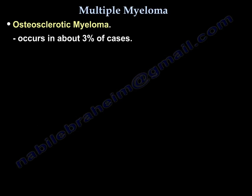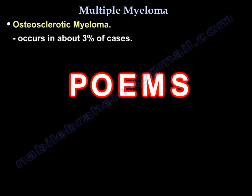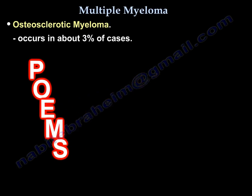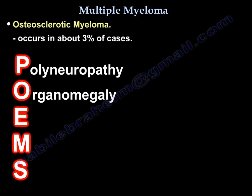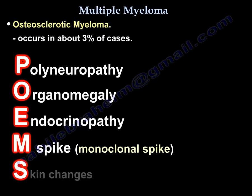Osteosclerotic myeloma occurs in about 3% of myeloma cases. The mnemonic POEMS summarizes its features: P for polyneuropathy, O for organomegaly, E for endocrinopathy, M for M-spike, and S for skin changes.